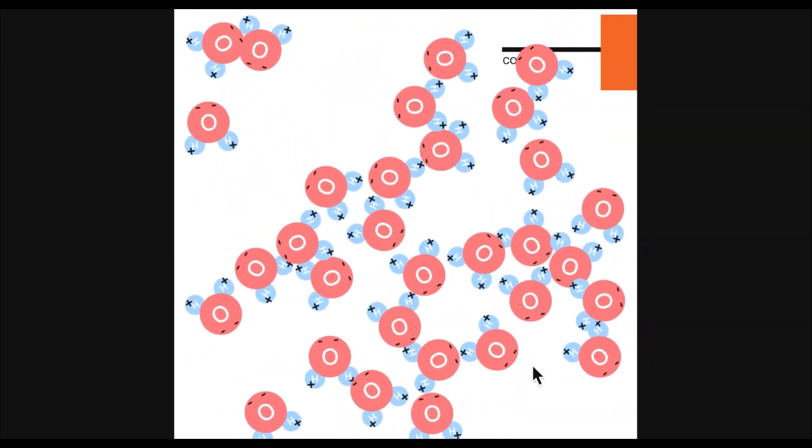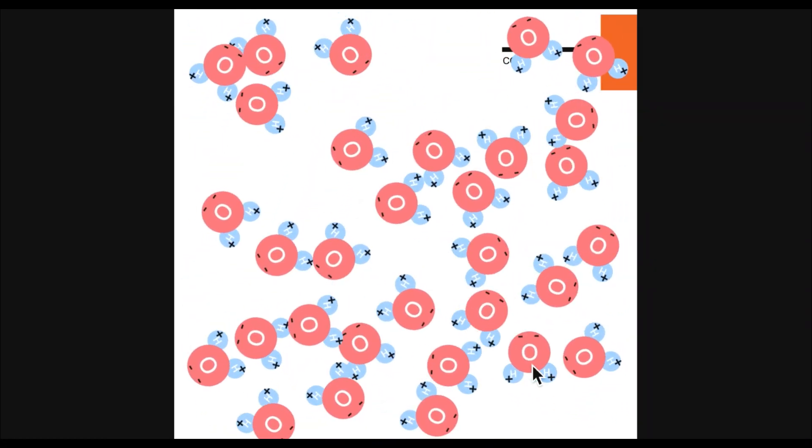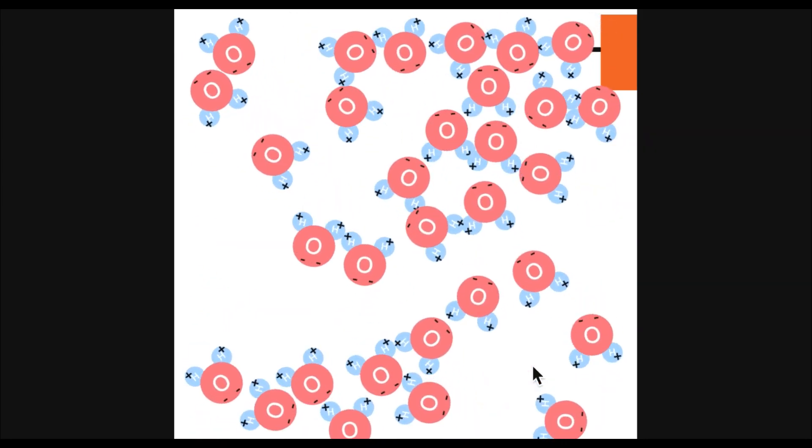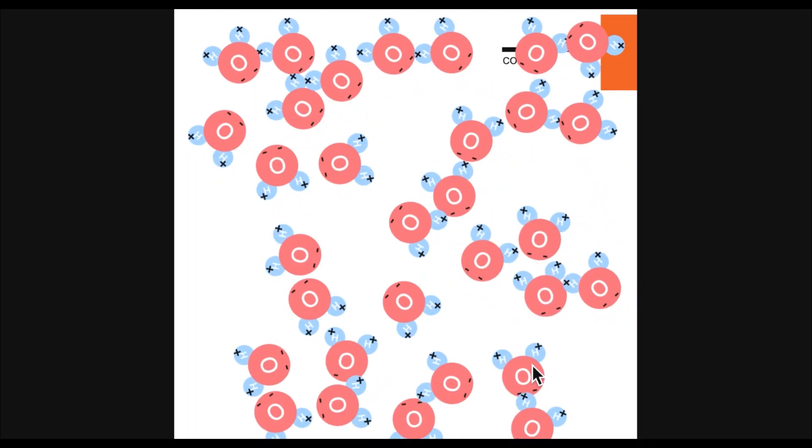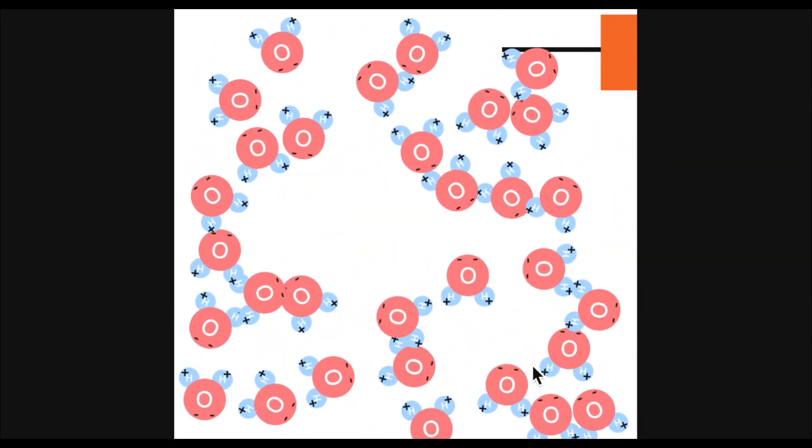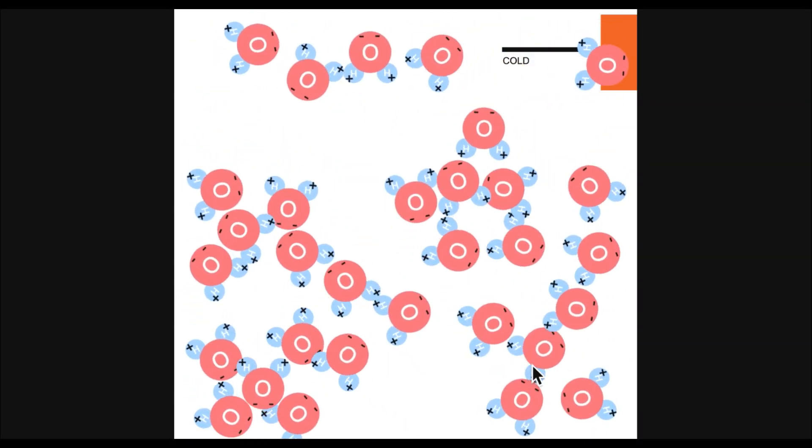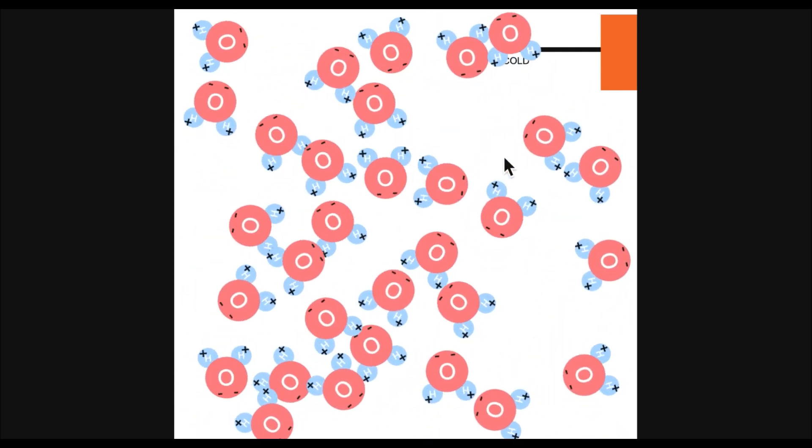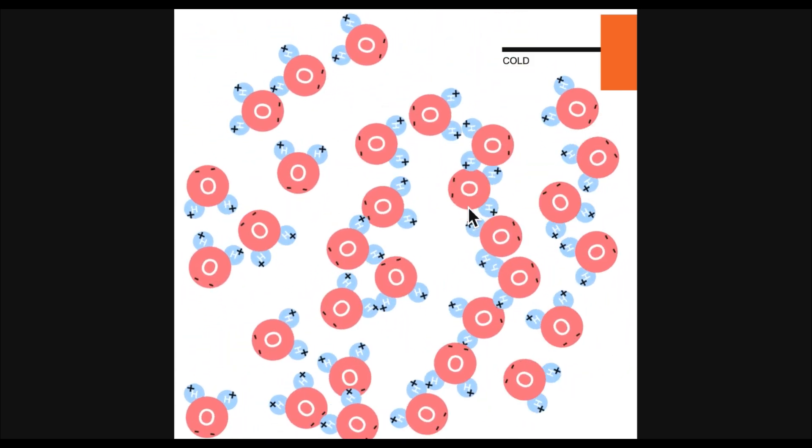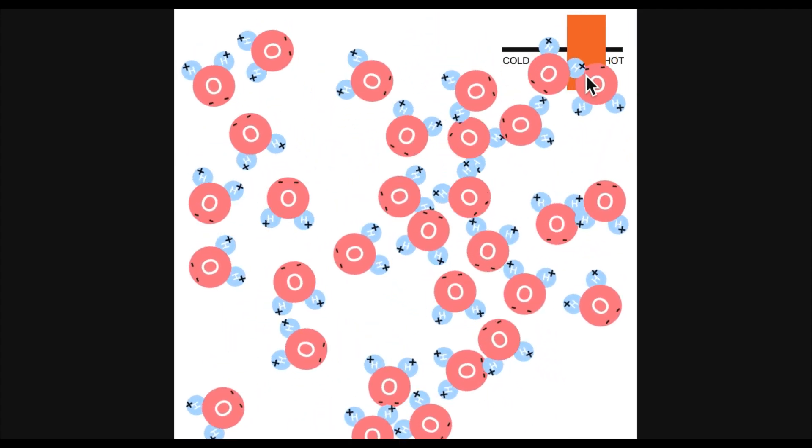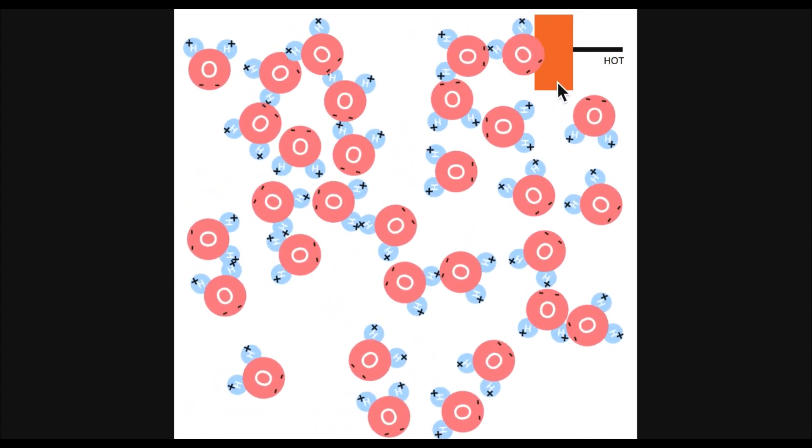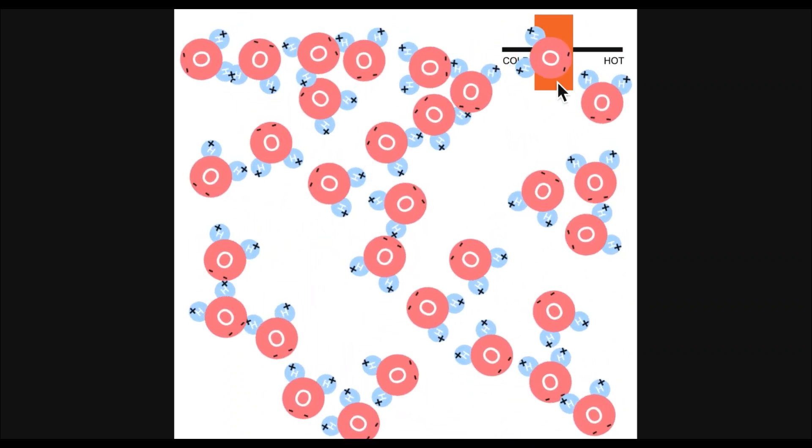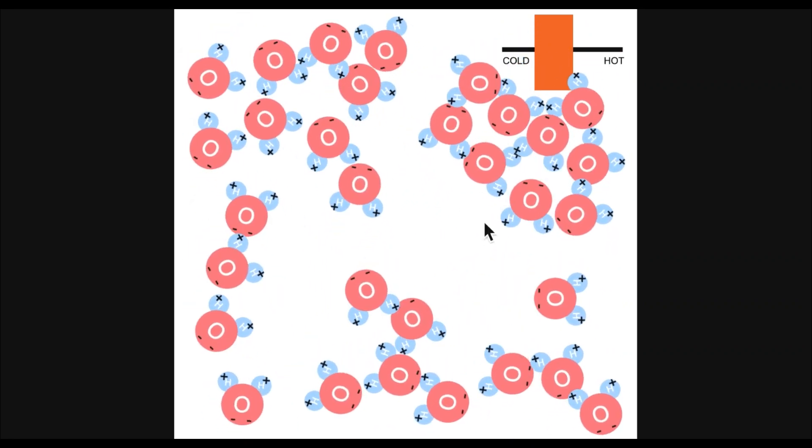Atoms are made up of smaller particles called electrons, protons, and neutrons. The protons and neutrons are found in the center of the atom called the nucleus. Protons have a positive charge. If we look back, you see the plus signs? That's our positive charge. Neutrons have no charge and electrons are negatively charged.